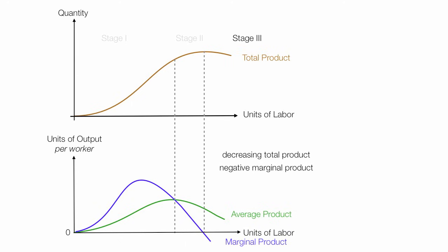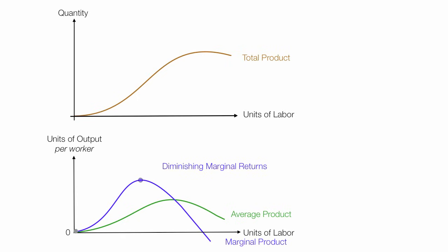And with negative marginal product, total product is actually falling. Adding more labor causes total product to fall. One last idea is diminishing marginal returns. And that's from that point forward where marginal product of labor, the slope is actually negative or decreasing.